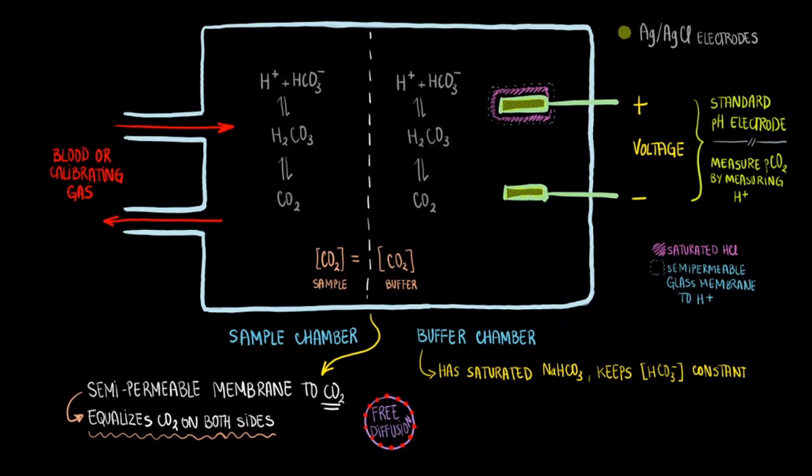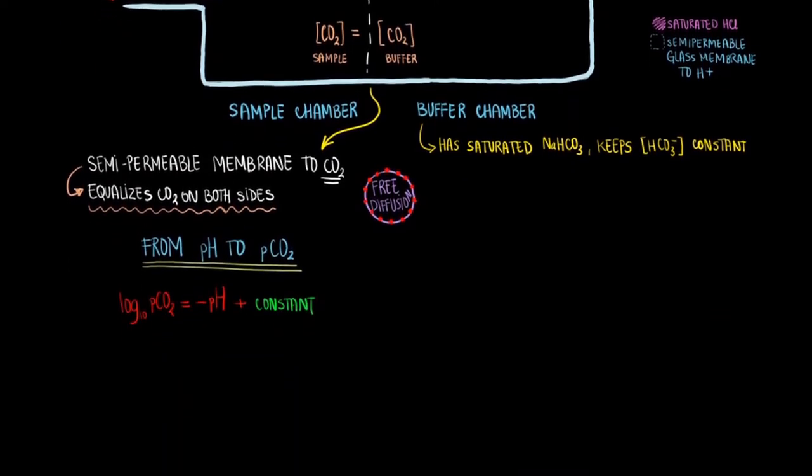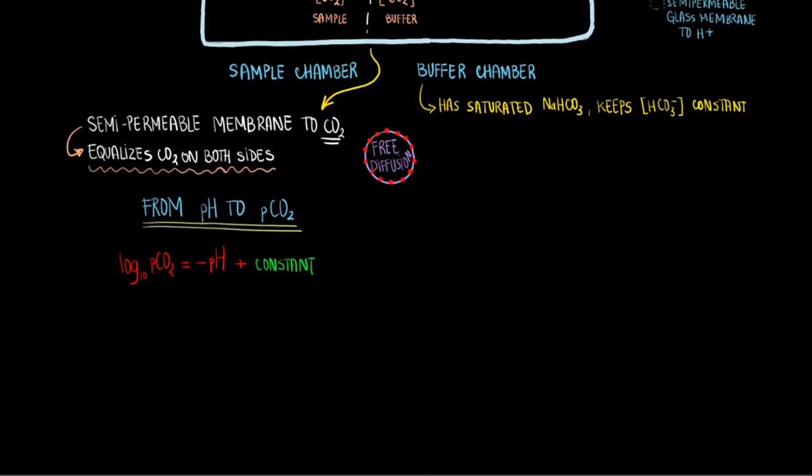Now, let's go on to the juicy stuff. We found the pH using the pH electrode. What does this mean in terms of the partial pressure of carbon dioxide in the sample? This very simple equation can actually reveal the partial pressure of CO2 from a pH value measured by the pH electrode.